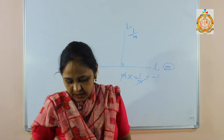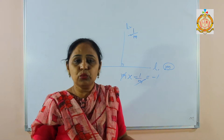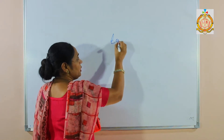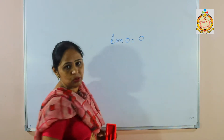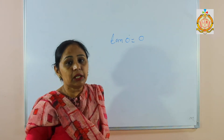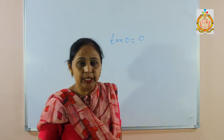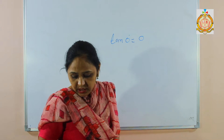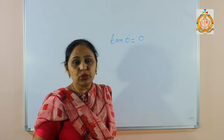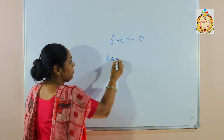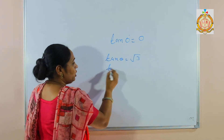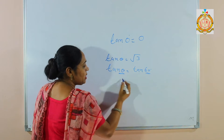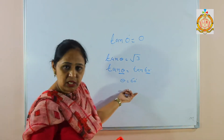Now in the exercise, the first sum asks us to find the slope when angles are given. We find tan of the angle. For 0 degrees, tan 0 equals 0. If the value given is 72 degrees 30 minutes, we use the tangent table at the back of the book. Next, we have to find the inclination when the value of tan theta is given as root 3. From the table, tan 60° equals root 3, so theta equals 60 degrees — the inclination is 60 degrees.